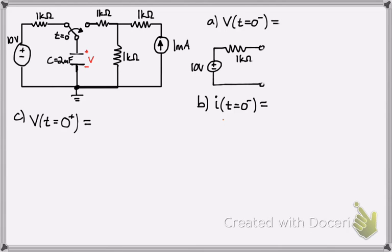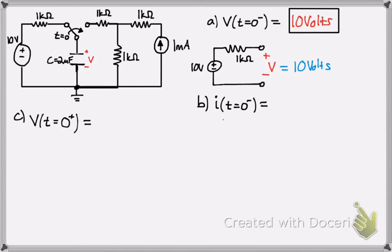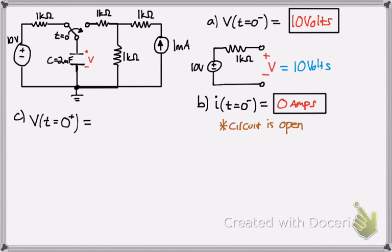What happens is: there's a 10-volt battery source, so the voltage across the capacitor would also have to share that same voltage initially before the switch is flipped — so you just get 10 volts. That's how you get the first part. Now, what about the current? Well, since we're treating this like an open circuit, the current wouldn't be there. There is no current because the circuit is open.